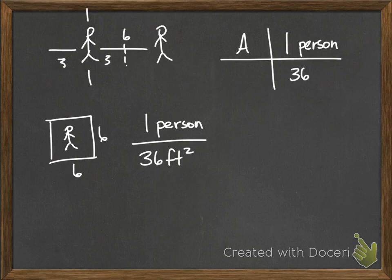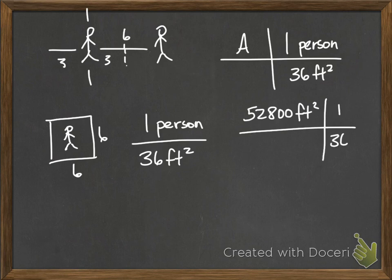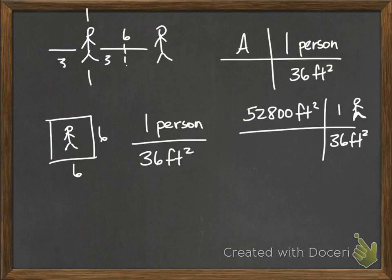Using the same parade route with social distancing, we take our area of 52,800 feet squared and divide by 36 feet squared per person, giving about 1,467 people — rounding down to 1,466. That's a much smaller crowd for the same parade route under social distancing conditions.